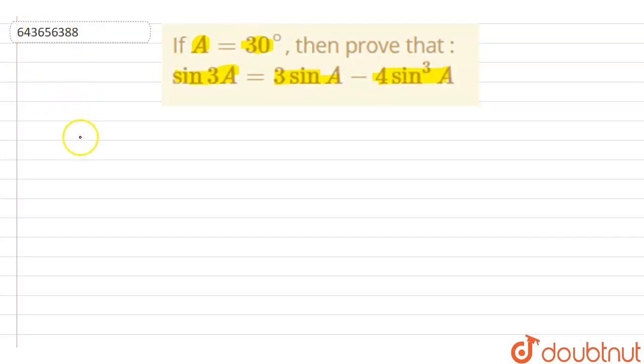Now let's first solve our LHS. At our LHS, it is given as sin 3A, and here it is also given that A equals 30 degrees. So this means we can also write it as sin(3 × 30°), which means sin 90°. And we know that sin 90° equals 1.